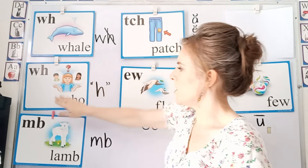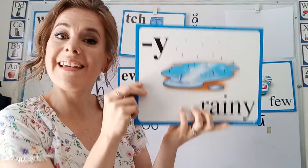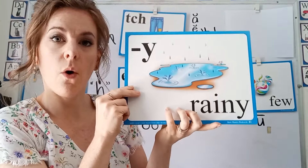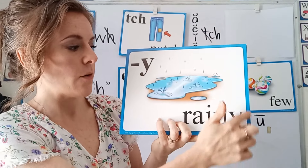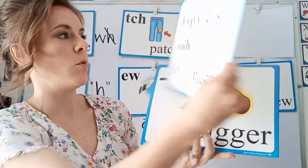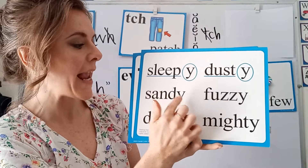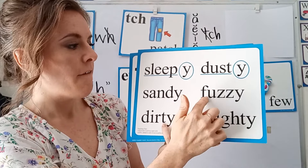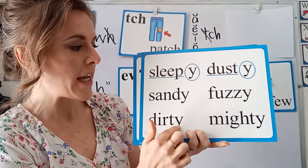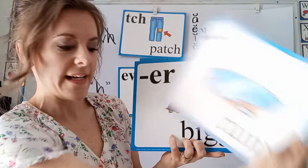Then we have our suffixes. These are a letter or a group of letters that come at the end of a word. We have the Y suffix in rainy — it's added to the end to make a new word. Examples: sleepy, dusty, sandy, fuzzy, dirty, mighty.